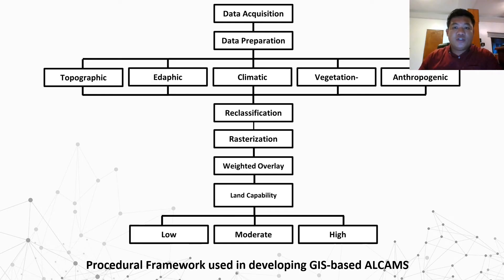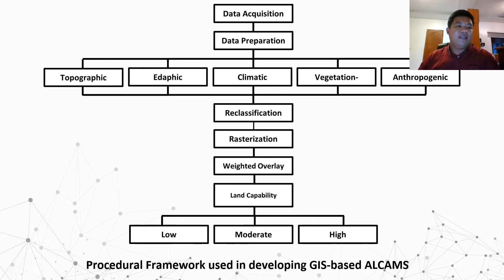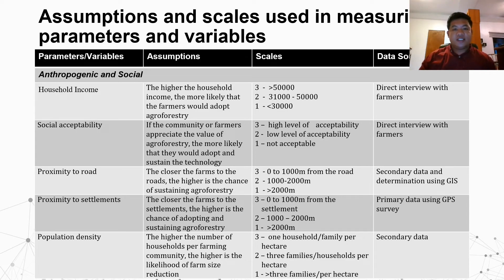The land capability modeling process follows a procedural framework beginning with the preparation of gathered data using ArcMap 10.3.1. The 14 parameters underwent several geoprocessing tools and were converted to raster format with uniform resolution and cell size. Each parameter was then reclassified or ranked based on the proposed classification, where reclassification changes values on a one-to-one basis. Afterwards, the 14 parameters were integrated using weighted overlay, with the derived weights from AHP applied. All rasters were reclassified using a scale of 1 to 3, with 3 being the highest and 1 being the lowest.